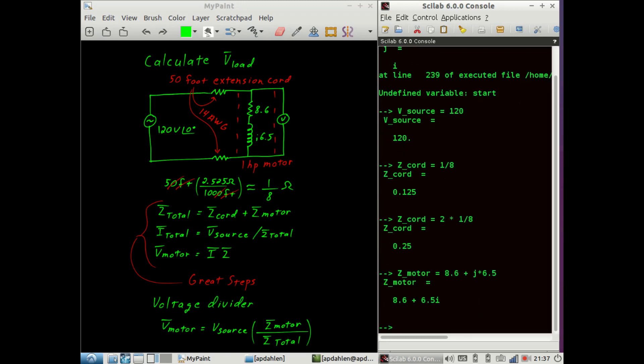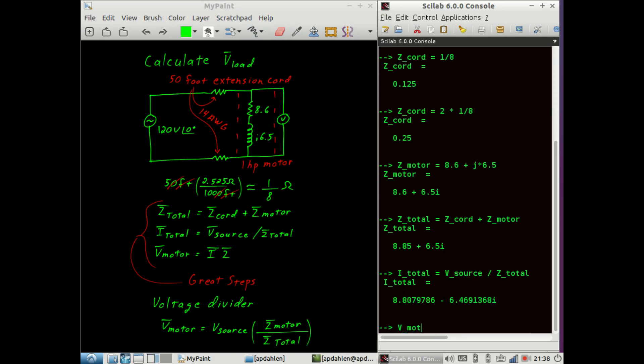The total impedance is the impedance of the cord plus the impedance of the motor, where the impedance of the cord includes both strands of wire. The total current is the source voltage divided by the total impedance. And the voltage on the motor is equal to the total current multiplied by the impedance of the motor.